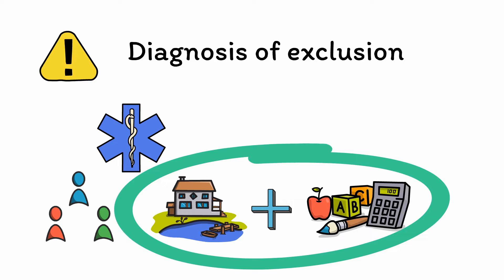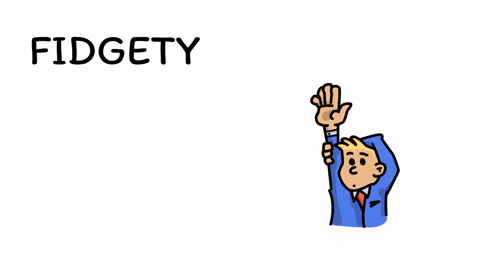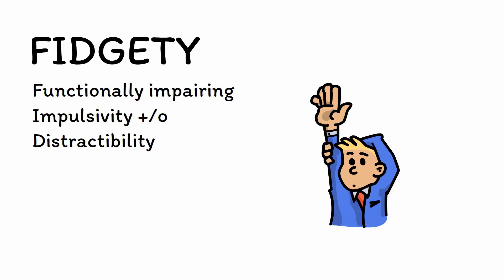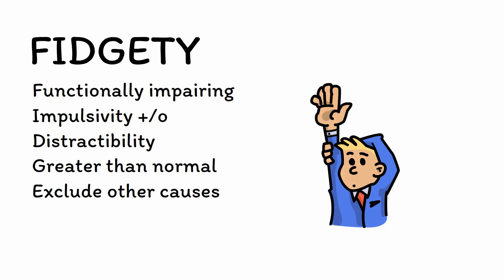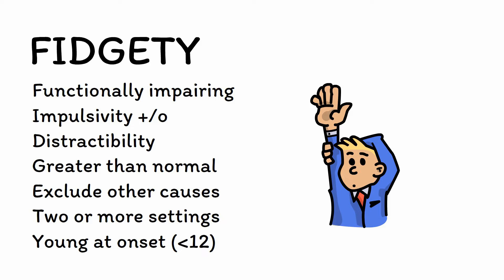You can use the mnemonic FIDGITY to remember the diagnostic criteria as listed in the DSM. The first half reminds you that the core pattern involves functionally impairing levels of either impulsivity and/or distractibility. The second half includes caveats: symptoms must be greater than expected for normal development; you need to exclude other causes such as mood or anxiety disorders; the patterns must be observed in two or more settings; and the patient must have been young at first onset, with signs appearing before the age of 12.